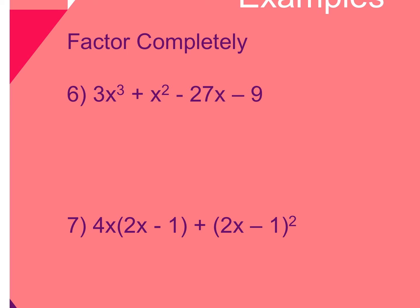For number 6, as soon as I see four terms, I'm thinking I need to try to factor by grouping — it doesn't necessarily always work, but in this case it can. Always remember to look for a greatest common factor first. This one doesn't have one — there's nothing in common — so I'm going to go ahead and make my groups.